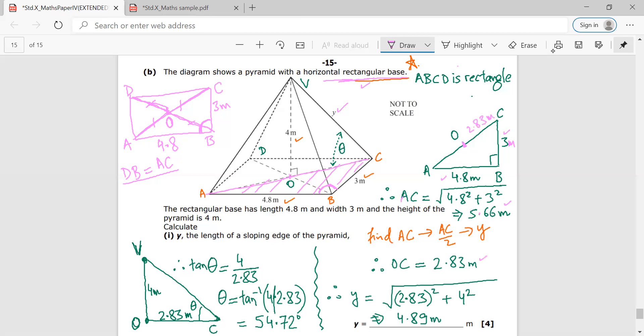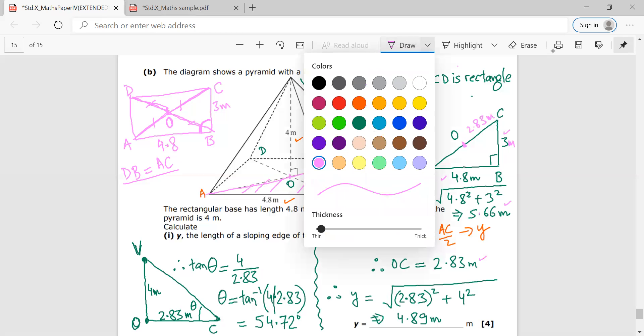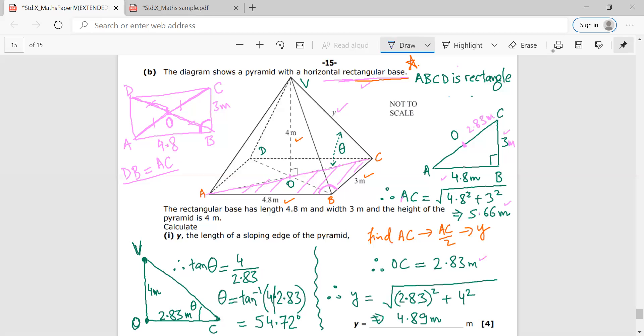Once I have found OC, once I have found OC to be, let me change the color. So once I found OC to be 2.83 meters, what I'll do is, now I'll shift my attention to this triangle VOC. Any doubt? No sir.